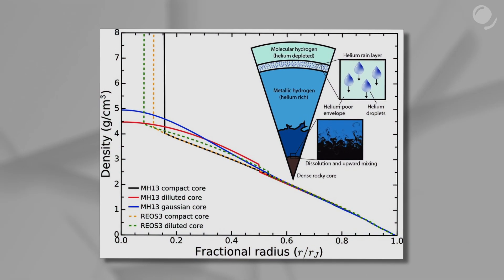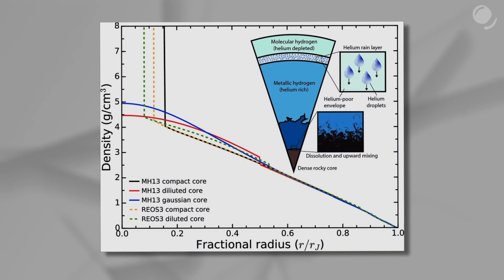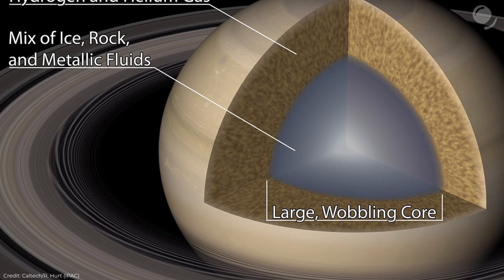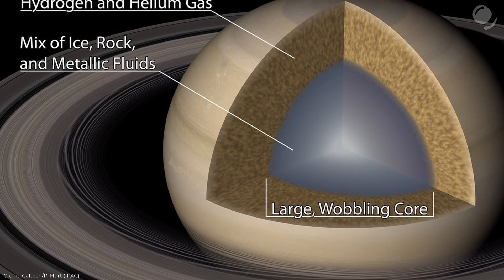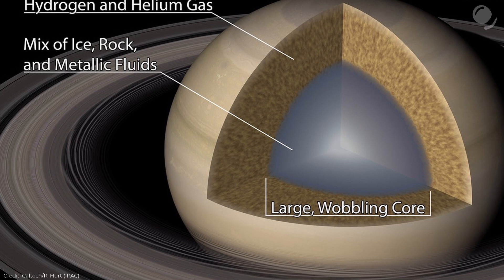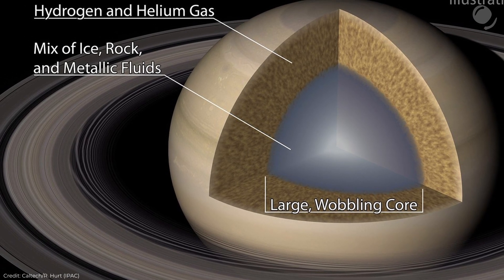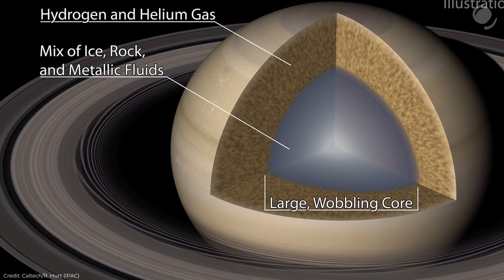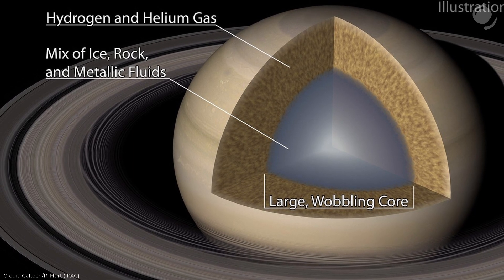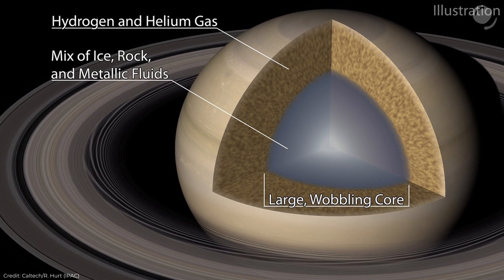Actually, there were some studies claiming that Jupiter might as well have such a diluted core. It also turned out that Saturn's core is much larger than previously thought — up to 60% of the planet's radius can be its core. The mass of ice and rock is about 17 Earth masses and the entire mass of the core is about 55 Earth masses.